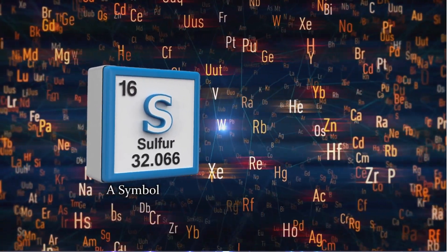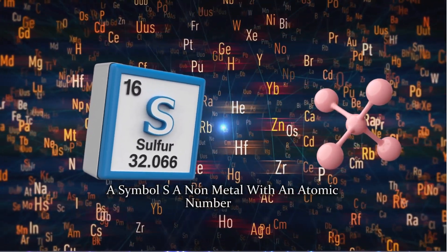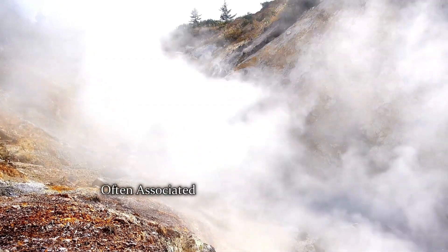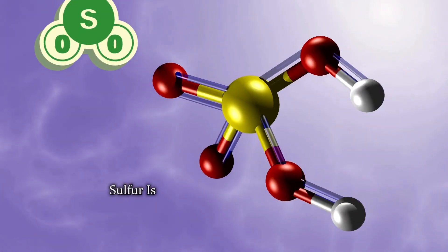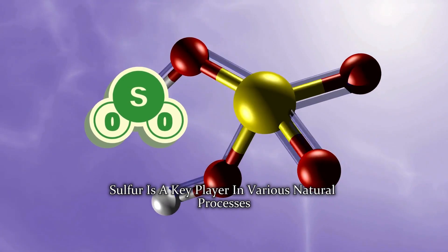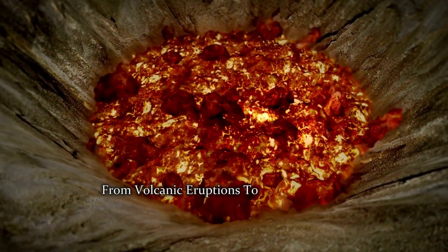Meet sulfur, symbol S, a non-metal with an atomic number of 16. Often associated with the scent of rotten eggs, sulfur is a key player in various natural processes, from volcanic eruptions to the chemistry of life.